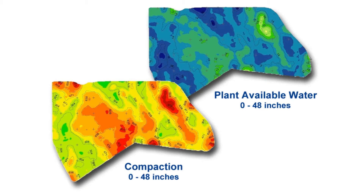Once we have that information back, we process it using specialized soil processing algorithms and then provide digital PDF maps.